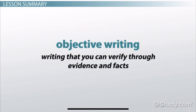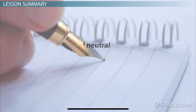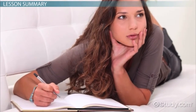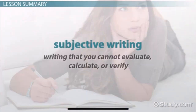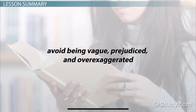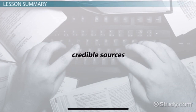Objective writing is writing that you can verify through evidence and facts. If you're writing objectively, you must remain as neutral as possible through the use of facts, statistics, and research. It's important to differentiate objective writing from subjective writing, which is writing that you cannot evaluate, calculate, or verify. To write objectively, avoid being vague, prejudiced, and over-exaggerated. Avoid using first person, and try to include credible sources. Following those tips will make your writing more difficult to be argued against, and will therefore assist in your credibility as a writer. Your audience will be more inclined to listen to what you're writing.